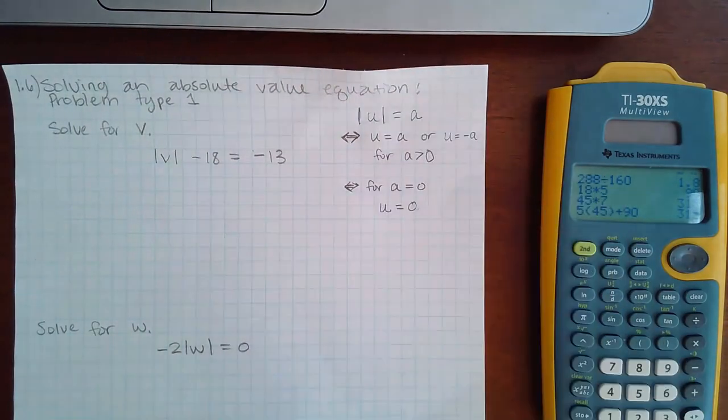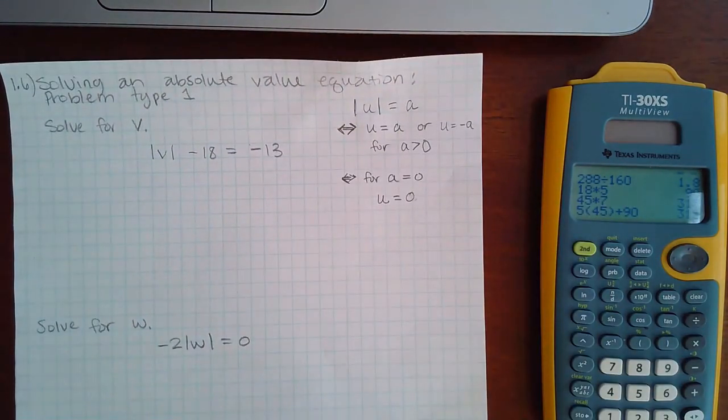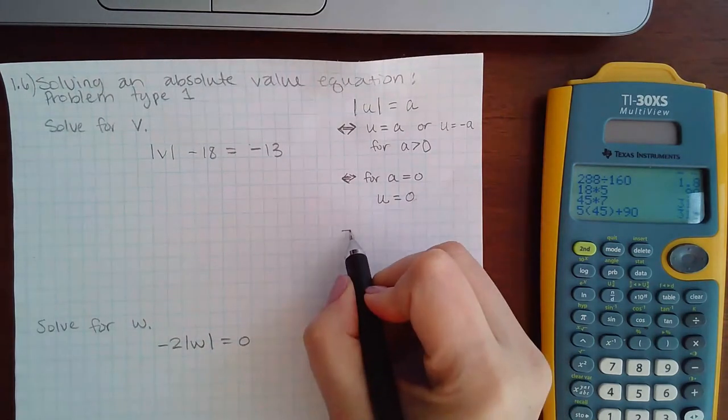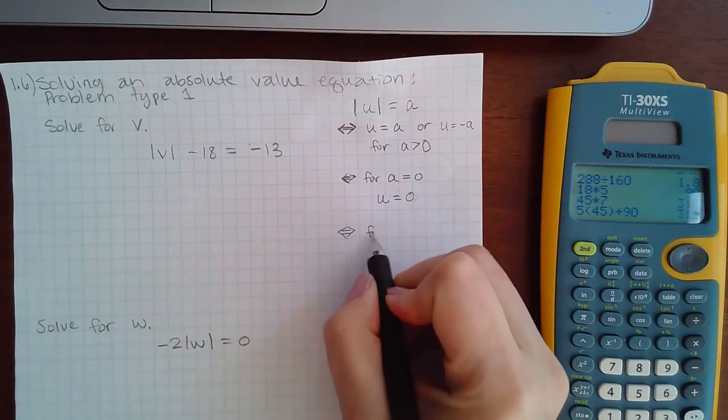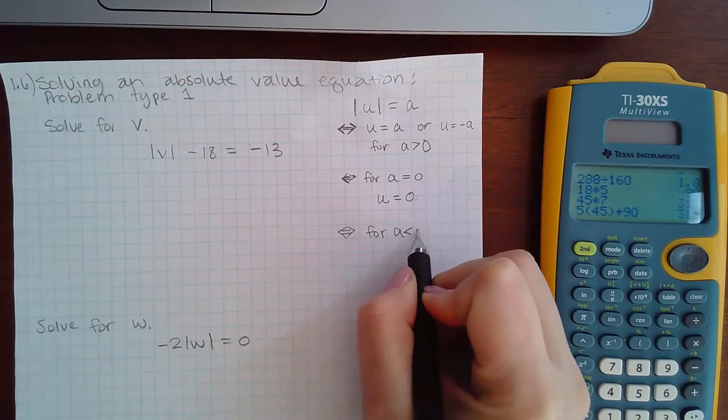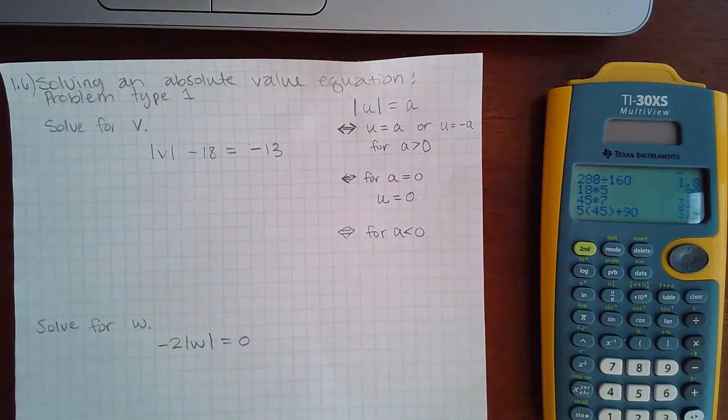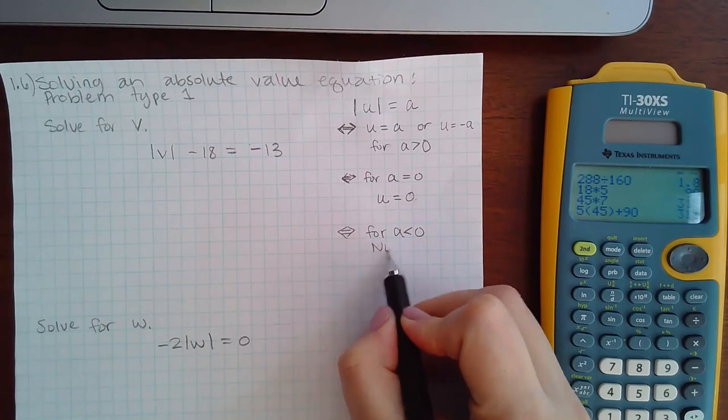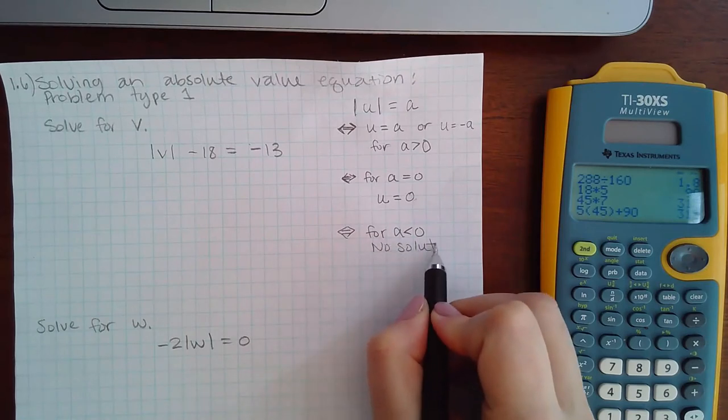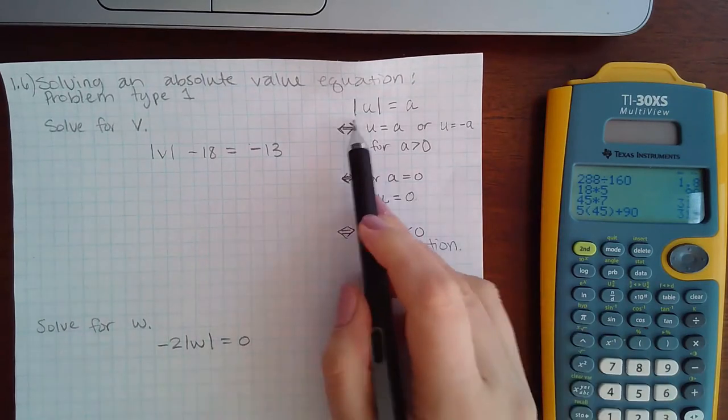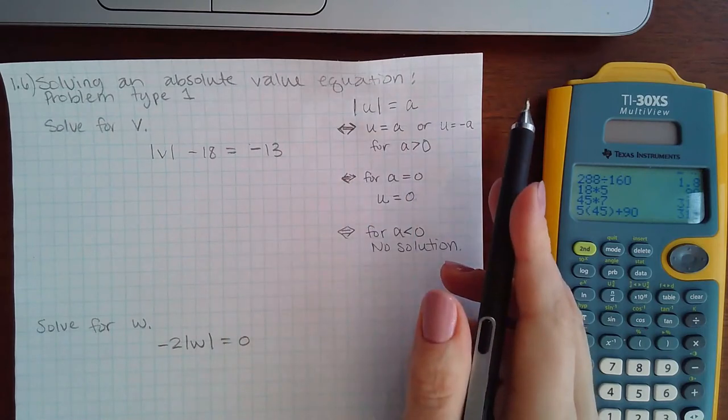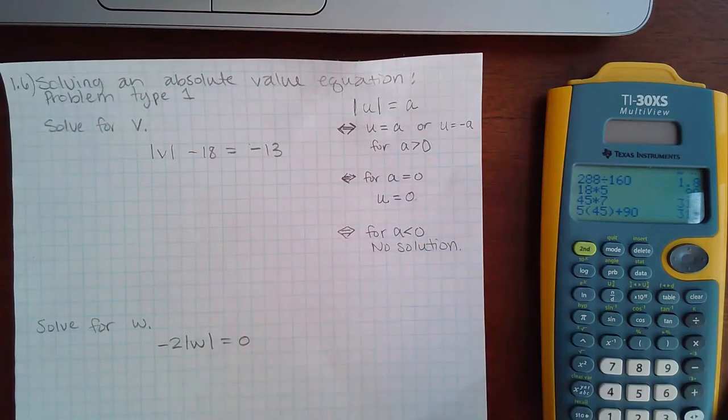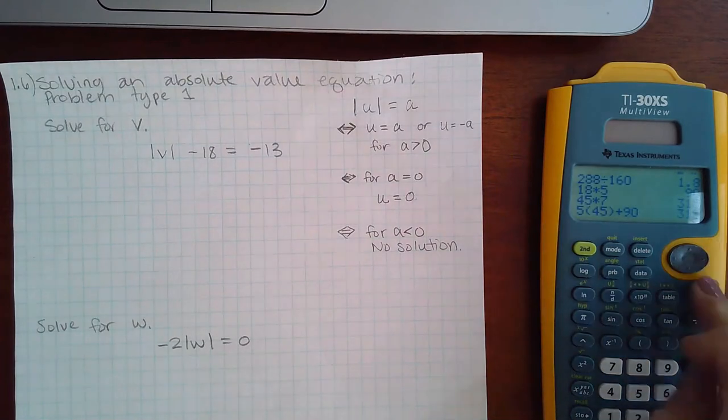And then the last case is for if a is less than zero. For a less than zero you get no solution, because the absolute value will always come out positive, it will never come out negative. So that's why this one would be no solution.